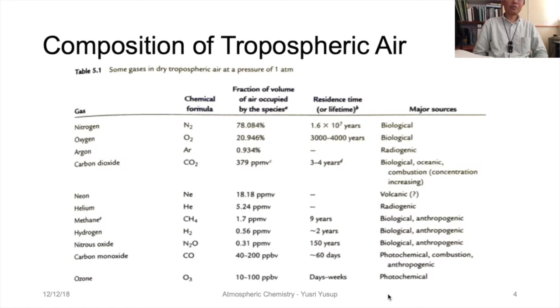The residence time of nitrogen gas is very long at 1.6 times 10^7 years, probably because there's no considerable sink that removes it from the atmosphere. The major source is biological. Same goes for oxygen at 20 to 21 percent.